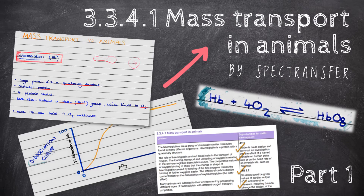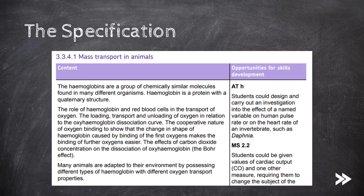Hey guys, welcome to Spec Transfer and to the first of two parts on topic 3.3.4.1: mass transport in animals, from the AQA A-level biology specification. In this series on mass transport in animals, we'll first give an introduction to haemoglobin.